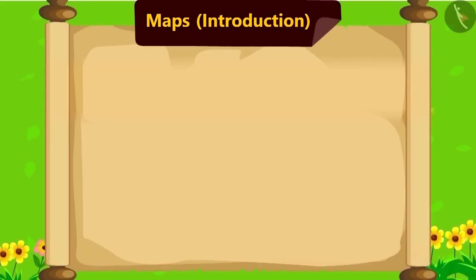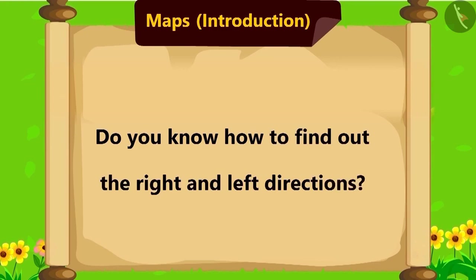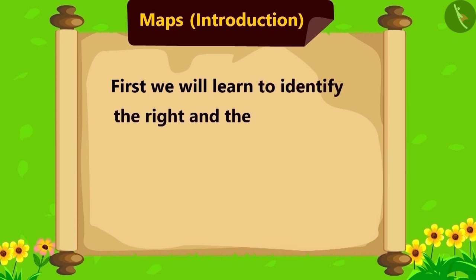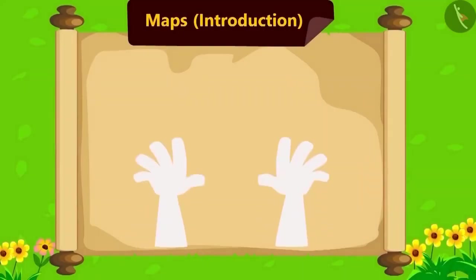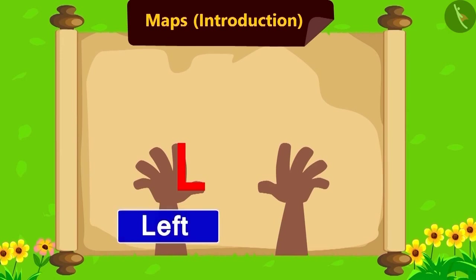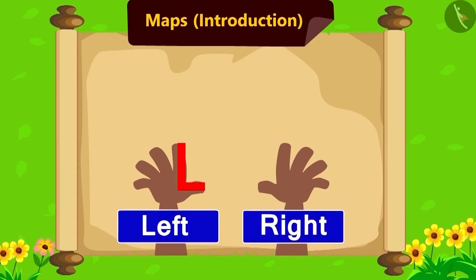Children, do you know how to identify the left and the right directions? First, we will learn to identify the right and the left hands. Keep your both hands like this. Now, in whichever hand you see this type of L, that is your left hand. And the other hand is your right hand.